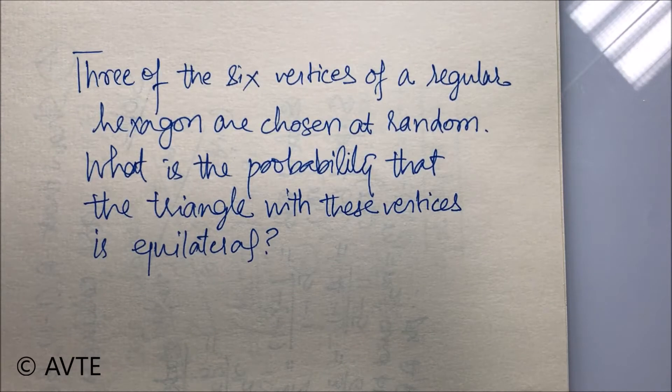Three of the six vertices of a regular hexagon are chosen at random. What is the probability that the triangle with these vertices is equilateral?